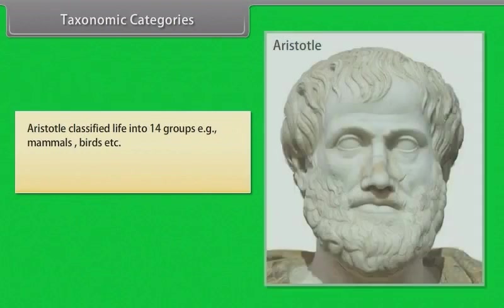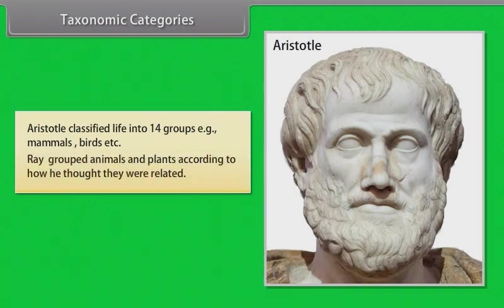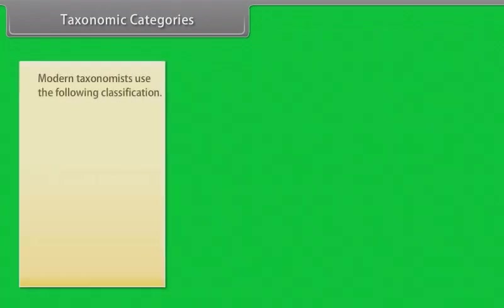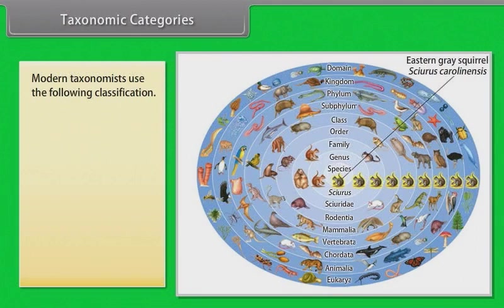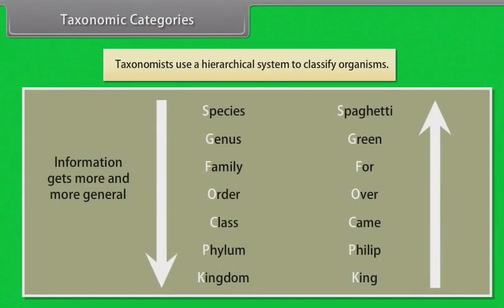Aristotle classified life into 14 groups — for example, mammals and birds. Ray grouped animals and plants according to how he thought they were related. Modern taxonomists use the following classification hierarchy: Species, Genus, Family, Order, Class, Phylum, Kingdom, and Domain. Taxonomists use a hierarchical system to classify organisms.